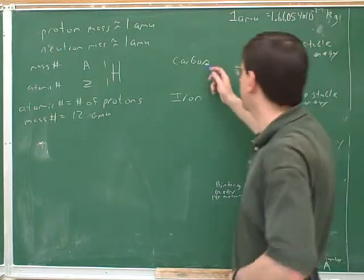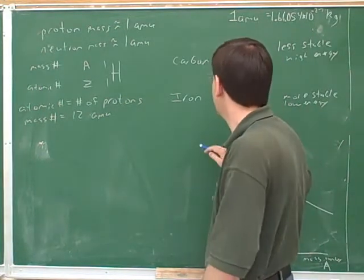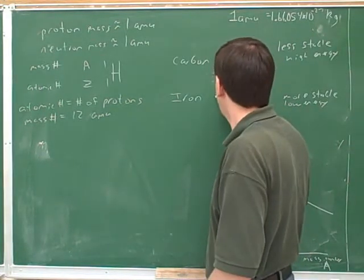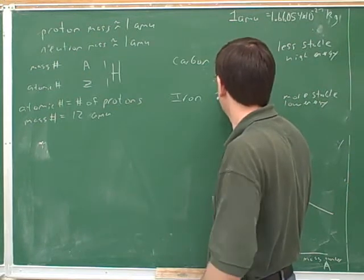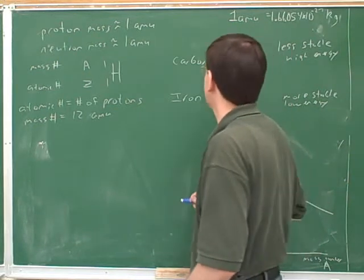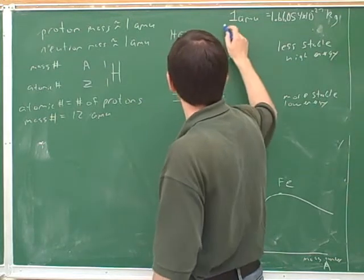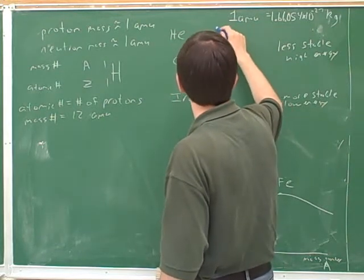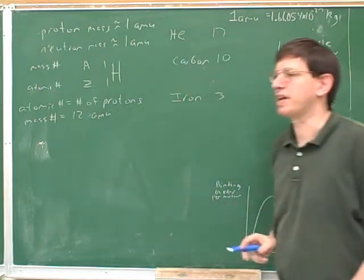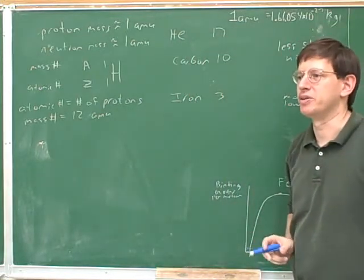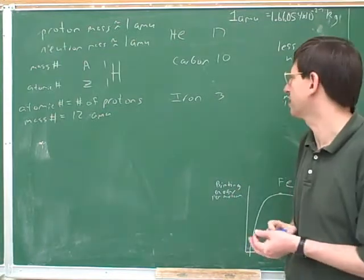For example, let's say that carbon had an energy of 10, and iron had an energy of 3, and then we could also compare that to helium — say that has an energy of 17. I'm just making up some arbitrary numbers here with no units just to make a little point, so the differences here don't really matter.